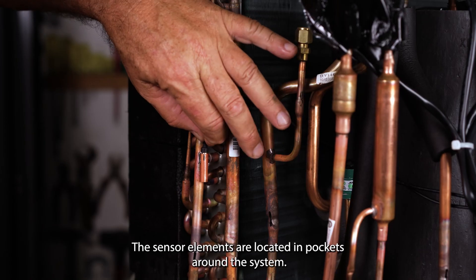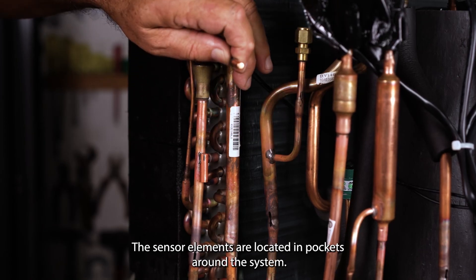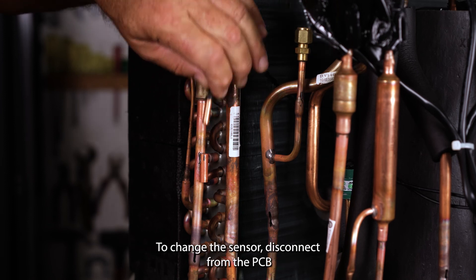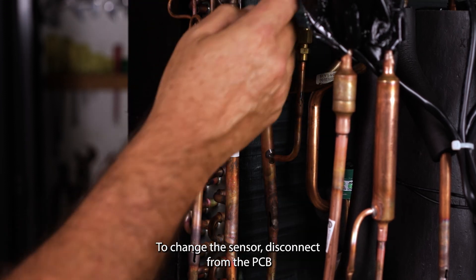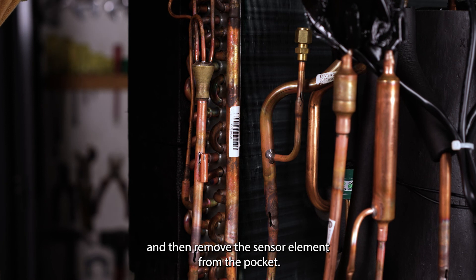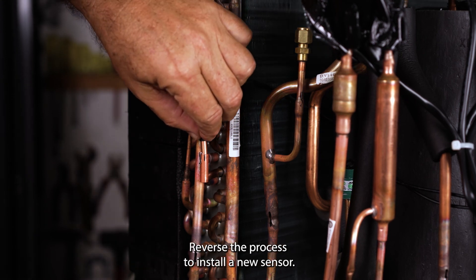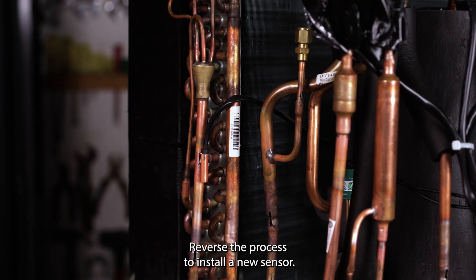The sensor elements are located in pockets around the system. To change the sensor, disconnect from the PCB and then remove the sensor element from the pocket. Reverse the process to install a new sensor.